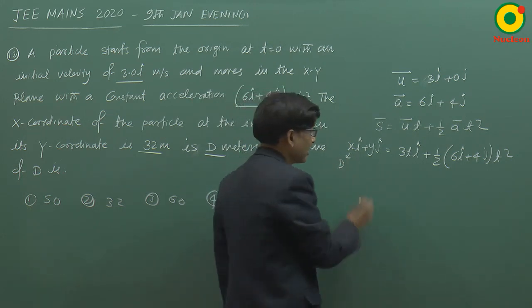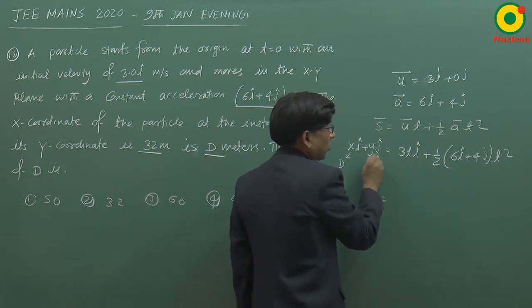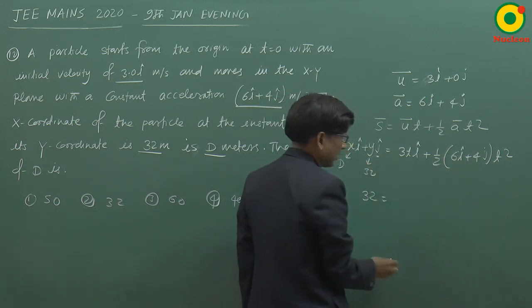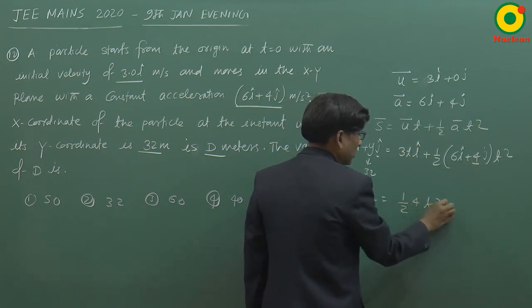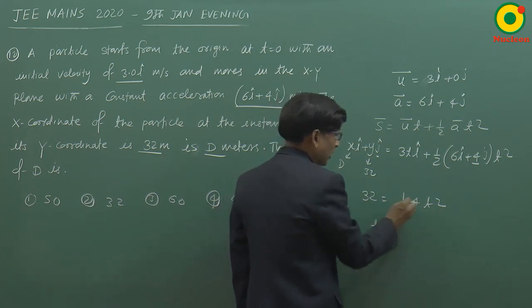y ke 32 diya hua hai question mein, to y jo hai 32 is equal to, j cap wala component mein compare karta hoon to udhar half 4 into t square aayega. T ka value aayega 4 second.